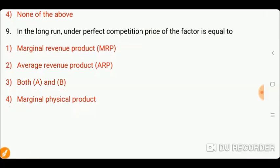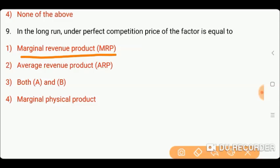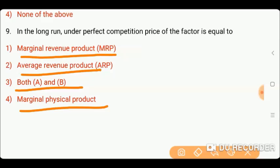Next question is: in the long run, under imperfect competition, the price of the factor is equal to? Options: A) marginal revenue product (MRP); B) average revenue product (ARP); C) both A and B; or D) marginal physical product. Friends, the right answer is option three, which is both A and B — the factor price equals both MRP and ARP.